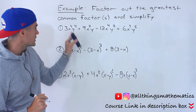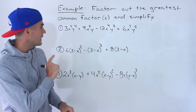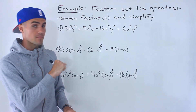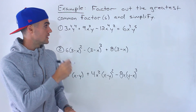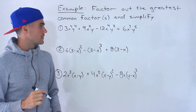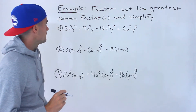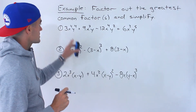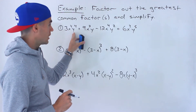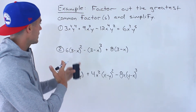Starting with number one, we've got 3x⁴y⁴ plus 9x³y minus 12x⁴y² plus 6x²y⁵. The first thing I'm going to look for is the coefficients in front — the constants — and whether there's a common factor we could take out.